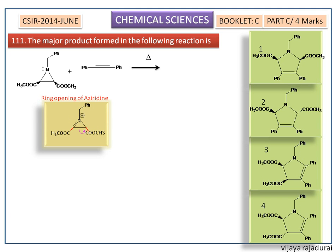The four electrons under thermal conditions will undergo conrotatory motion in this electrocyclic reaction, meaning they rotate in the same direction. For convenience, I remove the substituents and introduce the sigma orbitals, and now we apply conrotation.